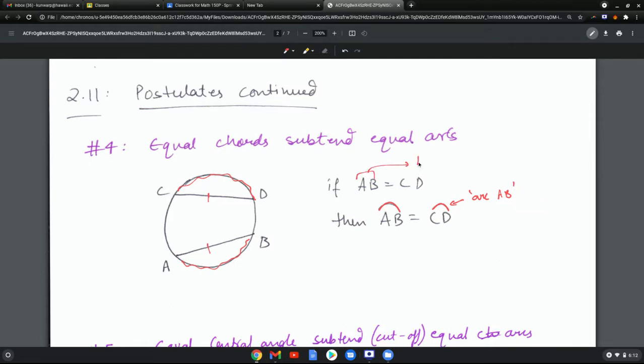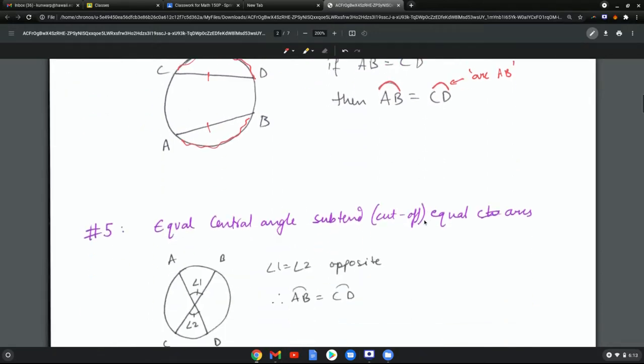...as opposed to when I just write AB, which means I'm talking about the line AB. So this says if AB the line equals CD the line, then AB the arc equals CD the arc.